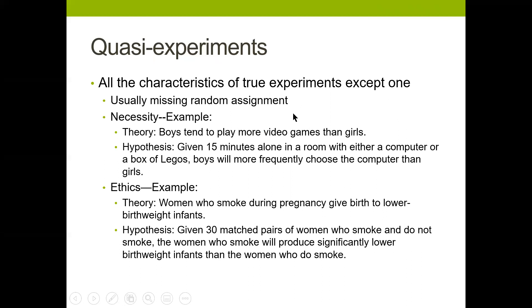We often have something that looks like an experiment but isn't, and we call these quasi-experiments. They seem like experiments, but they're not quite true experiments. They have all the characteristics of an experiment except one — and usually what's missing is random assignment.